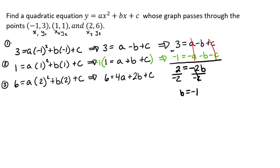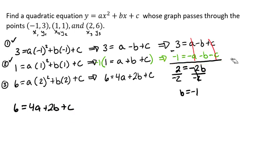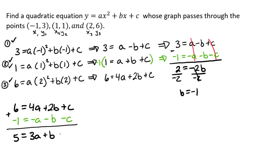Now we need to do something with equation three. We'll leave equation three as it is: six equals four a plus two b plus c. We can use that same strategy — take equation two multiplied by negative one, which gives negative one equals negative a minus b minus c. Adding these together, the c's cancel out and we get five equals three a plus b.